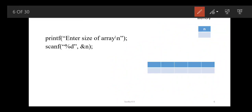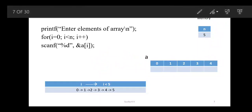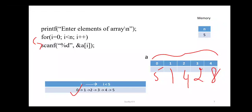Now enter the size of the array — I give it as 5. The array indices are 0, 1, 2, 3, 4. Then enter the elements of the array. The for loop starts at 0; 0 is less than 5, so the first element is 5, second is 1, third is 4, then 2 and 8. Like this you enter the elements.